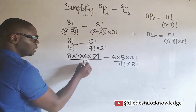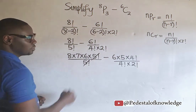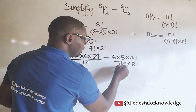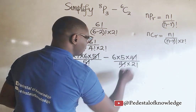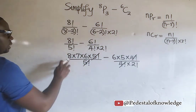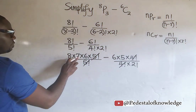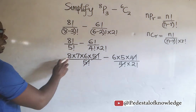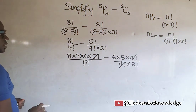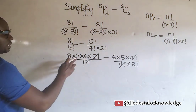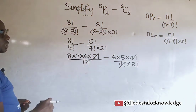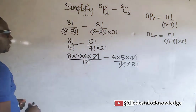5 factorial cancels with 5 factorial. And 4 factorial cancels with 4 factorial. So we are left with 8 times 7 times 6. Now, 8 times 7 is equal to 56, and 56 times 6 will give us 336.